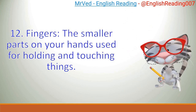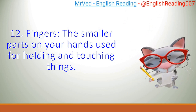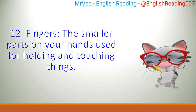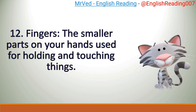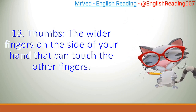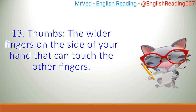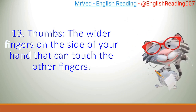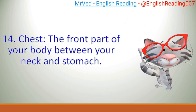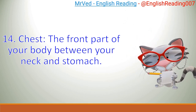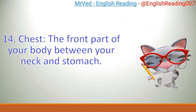12. Fingers, the smaller parts on your hands used for holding and touching things. 13. Thumbs, the wider fingers on the side of your hand that can touch the other fingers. 14. Chest, the front part of your body between your neck and stomach.